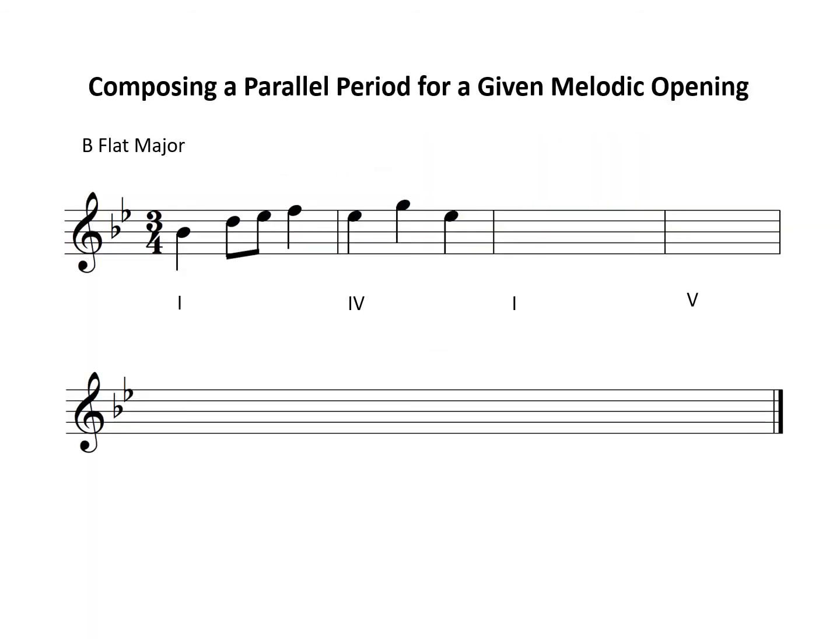Here's how we compose a parallel period using a given melodic opening. The first step is to go to beat 1 of bar 4 to write the ending note of the first phrase. Use scale degree 2 or 7, which are both notes of the dominant chord, so that the phrase ends on an unstable scale degree.